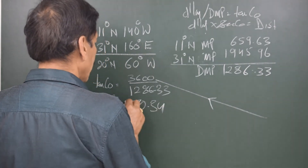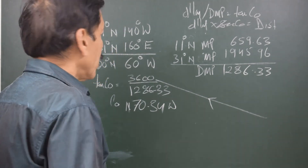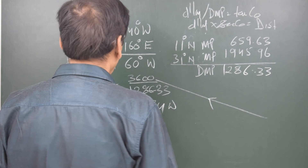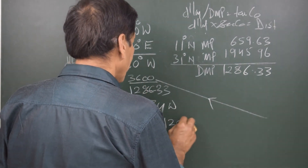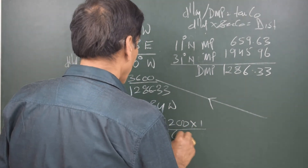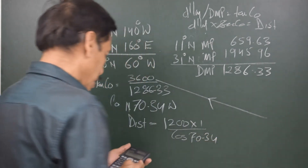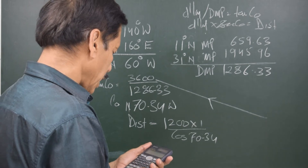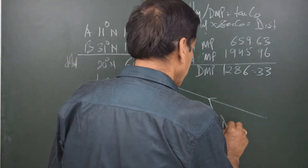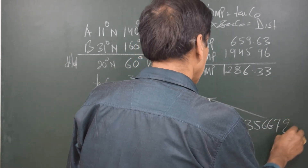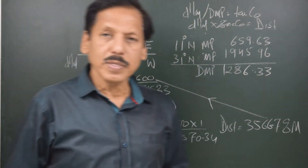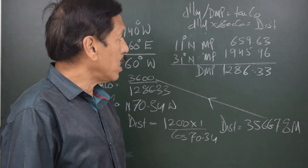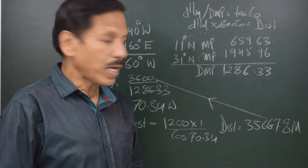The course is N 70.34° W. We have used the first formula: D long upon DMP equals tan course. The second formula is: distance equals D lat into sec course. D lat is 20 degrees, that is 1200 minutes, multiplied by sec 70.34, which is 1200 divided by cos 70.34 degrees, giving distance equal to 3566.78 nautical miles. So in a simple way we found both the course and distance using only two formulae: D long upon DMP equals tan course, and D lat into sec course equals distance.